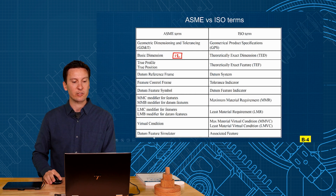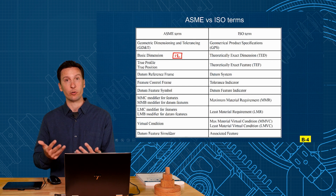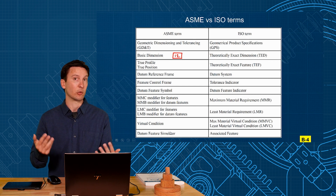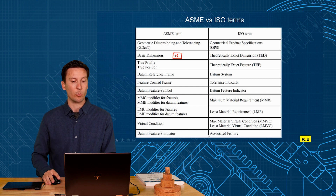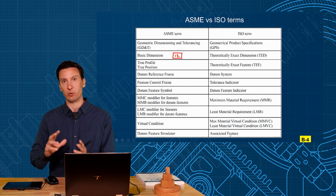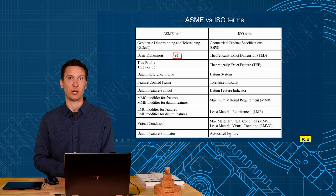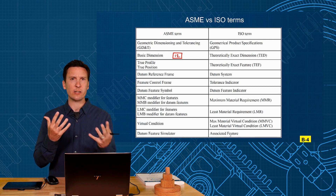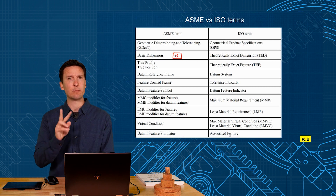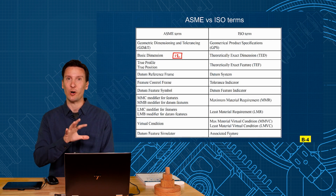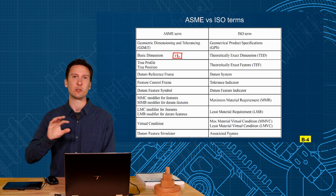The last thing we have is a Datum Feature Simulator, also known as a True Geometric Counterpart. ISO calls that an Associated Feature. So really, same concepts here, just a name change. Wanted you to be familiar with some of those, and I'll try to use those terms as we go through these videos.